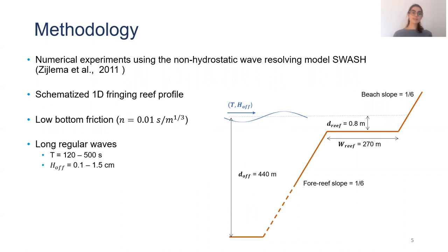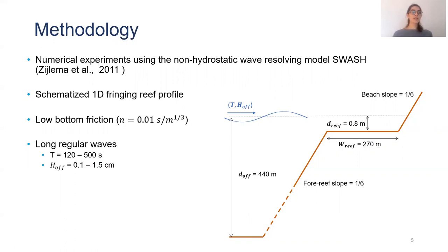We built a schematized one-dimensional fringing reef profile with a beach slope, a reef flat with a width of 270 meters, and a water depth over the reef of 0.8 meters, finalizing on a fore reef slope. We use low water friction, much lower than the normal one found in coral reefs. We use a simplified wave climate of long regular waves with periods between 120 and 500 seconds, and this range includes both resonant periods of our fringing reef, T0 and T1.